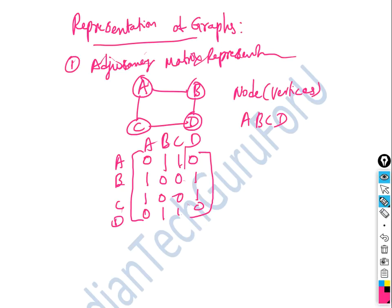One representation is adjacency matrix representation, where we represent a graph in matrix format. Another representation is linked list representation, also called linked list representation.